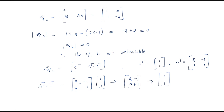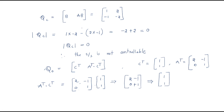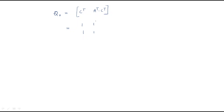The observable matrix Q_0 is [C^T | A^T·C^T]. C^T is [1; 1] and A^T·C^T works out to [1; 1]. So the modulation (determinant) is 1×1 minus 1×1.